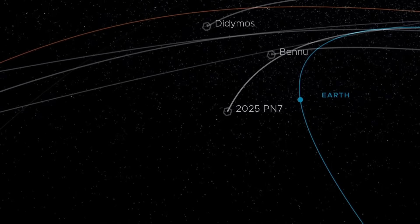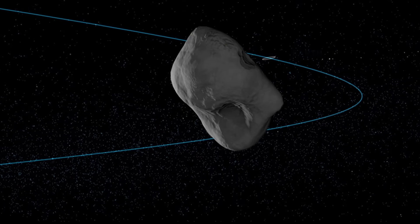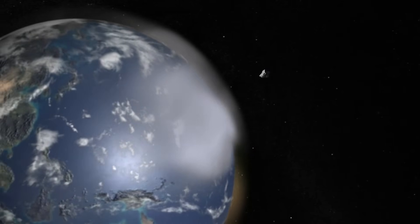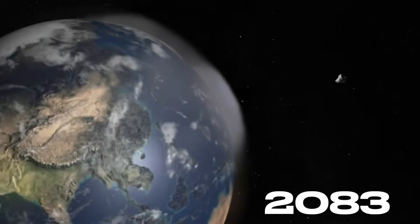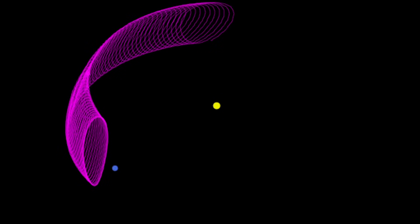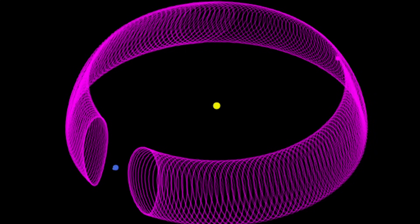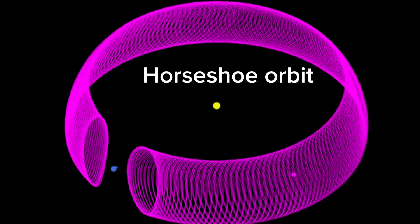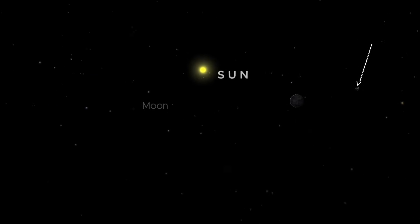As for how long it will stay in this role, current best estimates suggest 2025 PN7 will continue being in this quasi-moon arrangement with Earth until around the year 2083. After that, gradual gravitational interactions, mainly from the Sun and Earth, and perhaps other planets, are likely to change its path so that it breaks away or shifts into a different kind of orbit, for example, a horseshoe orbit. So for roughly the next 60 years or so, our planet will have this extra little companion.